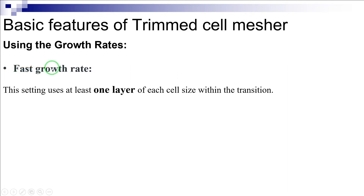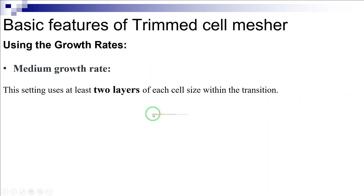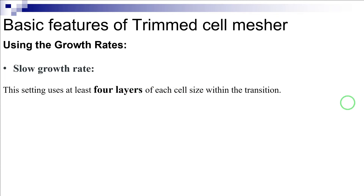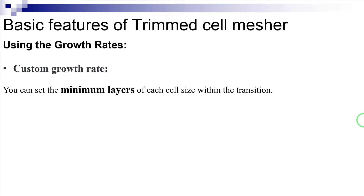The volume growth rate is used to set the transition of one cell size to the next within the template mesh, while the surface growth rate determines the transition of cell sizes for the cells next to surfaces in the template mesh. Star CCM+ provides five different growth rates: Fast, Medium, Slow, Very Slow, and Custom. The fast growth rate uses at least one layer of each cell size within the transition and results in the least number of cells. The medium option provides at least two layers, the slow option offers a minimum of four layers, and the very slow gives a minimum of eight layers of each cell size within the transition. Using the custom option, you can set the minimum layers of each cell size within the transition.